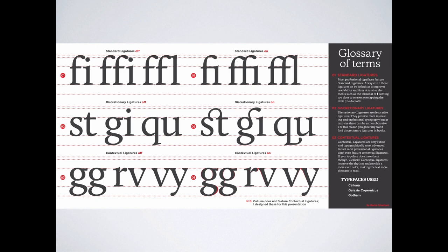Discretionary ligatures are more decorative — some fonts have them, some don't, and you can turn them on or off. Contextual ligatures, at the bottom, handle two letters that collide — they spread them out just a little bit. Essentially, with ligatures on, these special characters automatically apply when you have those letter combinations together. So typing with font-supported ligatures, two T's would automatically combine into one character.